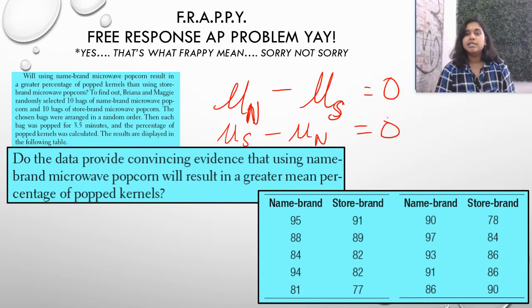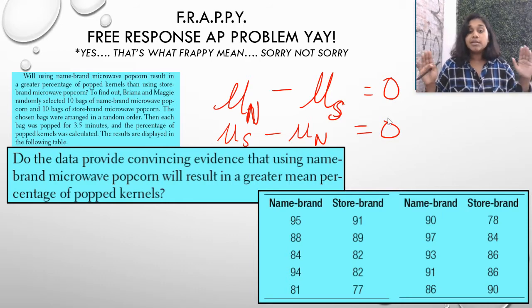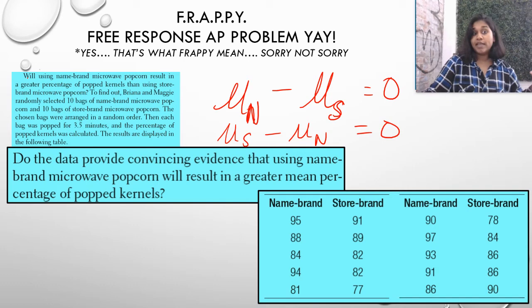So if you think about what are you trying to convince yourself of evidence, is that there should or shouldn't be a significant difference between the name brand and the store brand. Will using name-brand microwave popcorn result in a greater percentage of popcorn kernels than using store brand? So we're looking at that difference and we want to see that the null, of course, will be that whatever subtraction we do, whether it's mu of N minus or mu, we'll talk about that in just a second. But no matter what that is, the null hypothesis is going to be equal to zero, right?